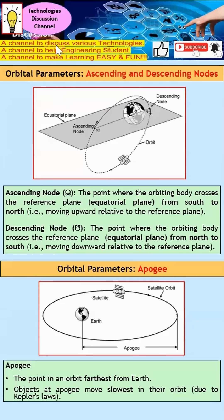I'd like to discuss various orbit parameters in order to describe satellite communication. The first one will be ascending and descending node. To understand this, you need to take a reference line, which is usually the equator of the Earth.